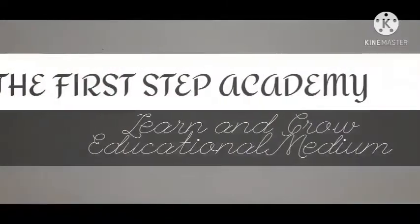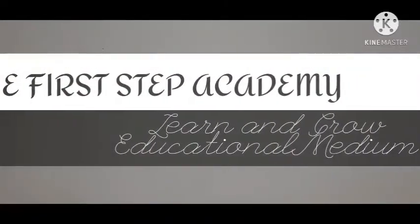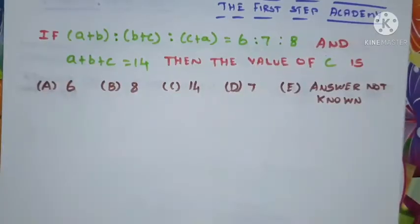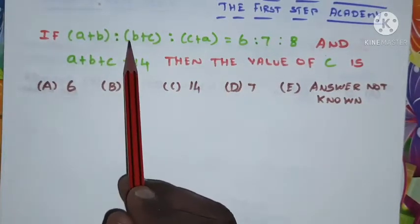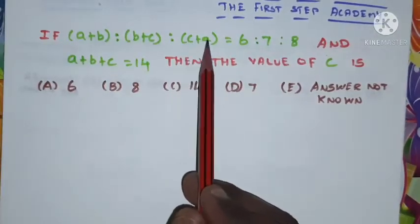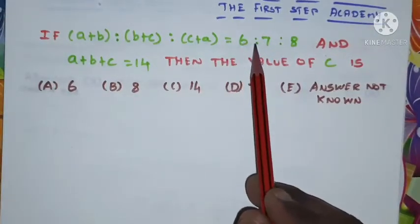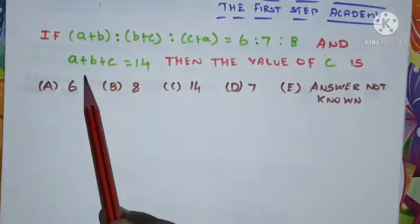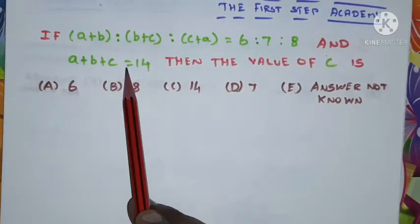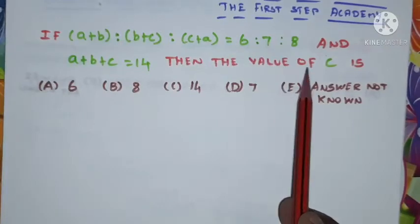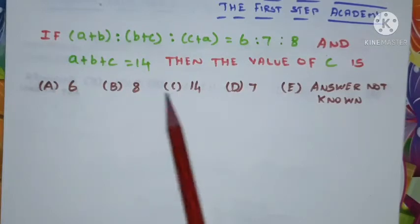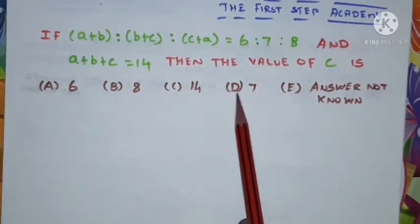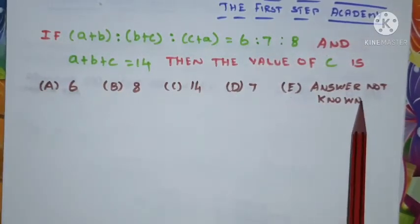Hi, hello, welcome to the First Step Academy — learn and grow educational medium. The given problem is: if (a+b) is to (b+c) is to (c+a) is equal to 6 is to 7 is to 8, and a+b+c is equal to 14, then the value of c is — given options: option A: 6, option B: 8, option C: 14, option D: 7, option E: answer not known.